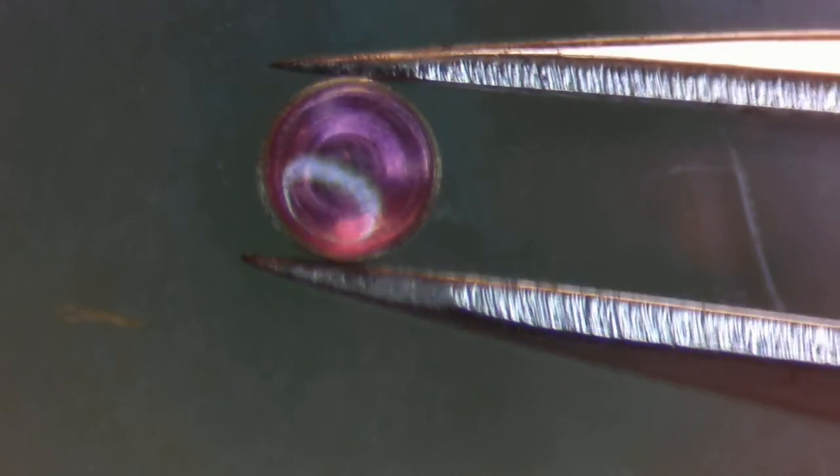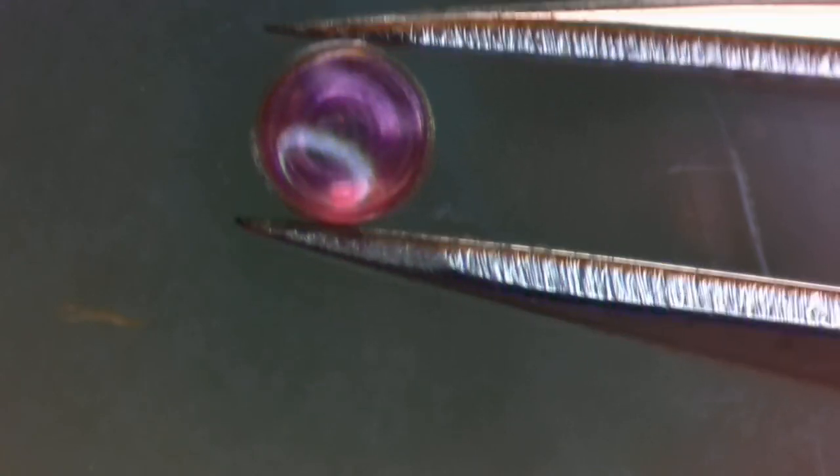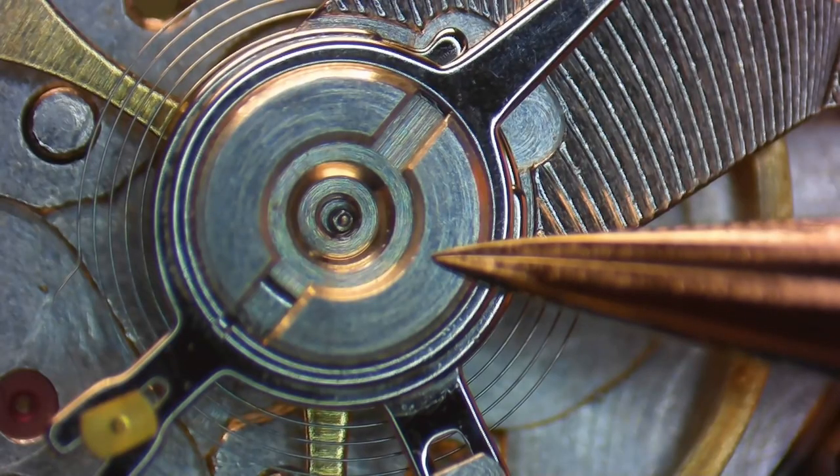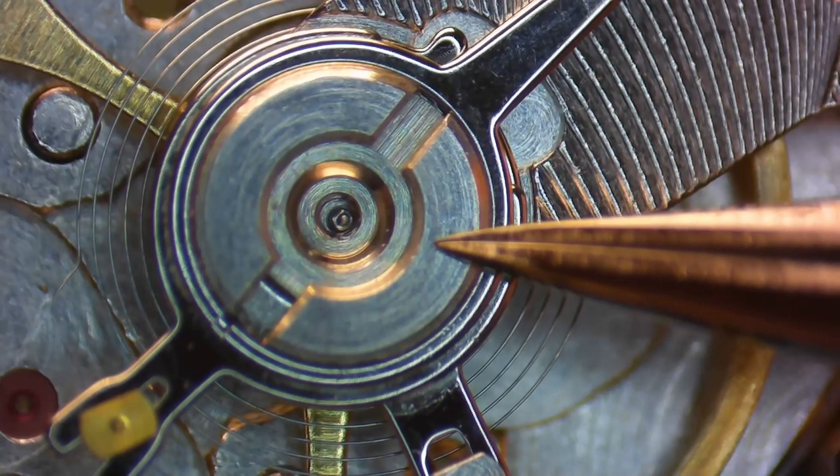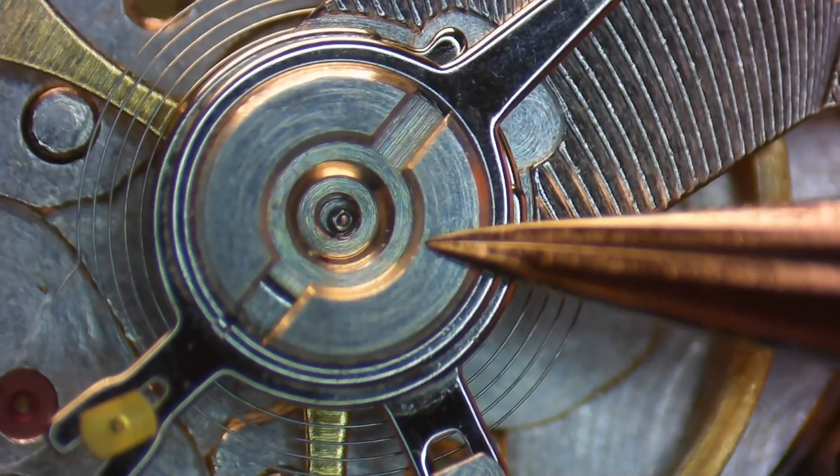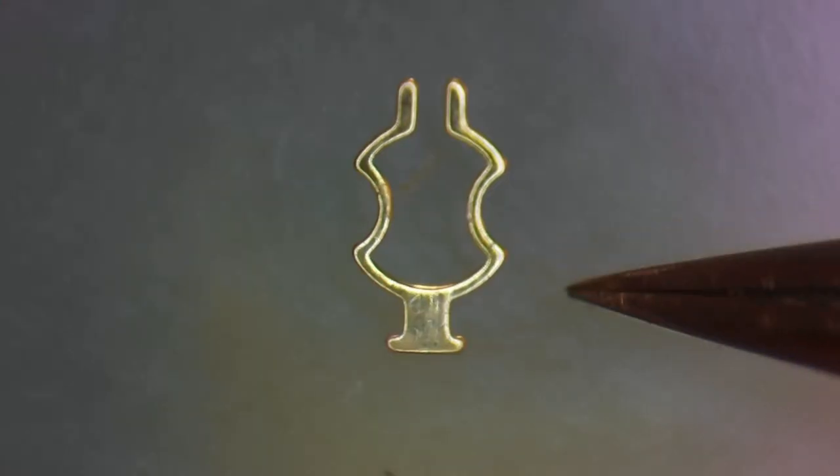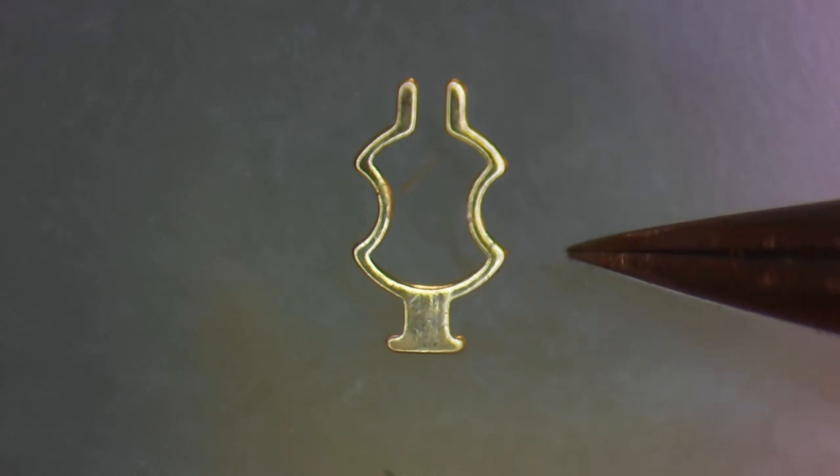The chaton sits in the block, which is mounted into both the main plate and the balance bridge. The retaining spring fits into the block and presses down on the end stone, holding the chaton in its position in the block.